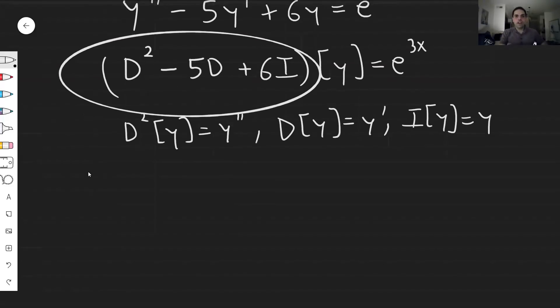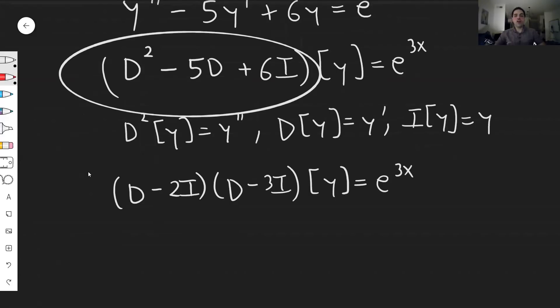Namely, you can write this as (D - 2I)(D - 3I)[y] = e^(3x). And here's the awesome thing. Using this, you can actually write the second order differential equation as two first order differential equations as follows.